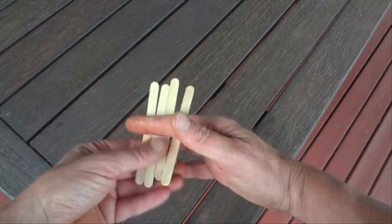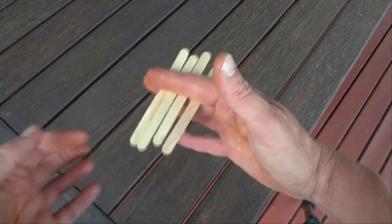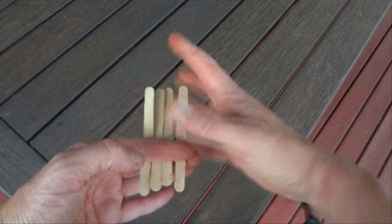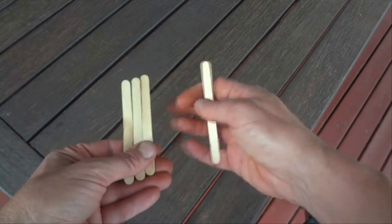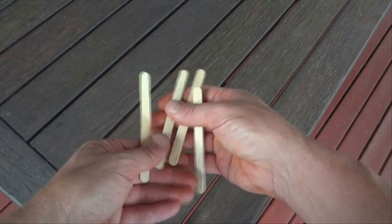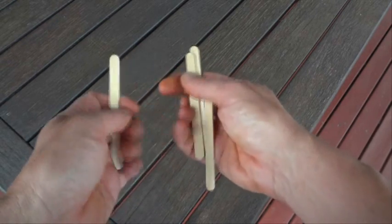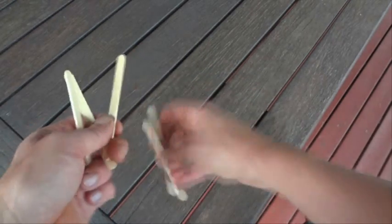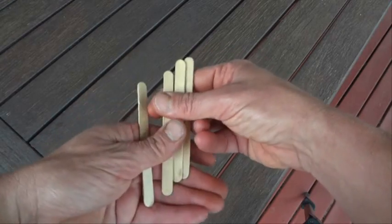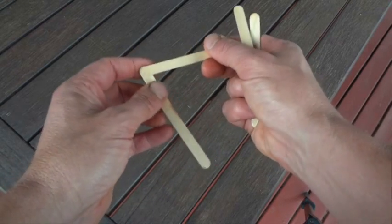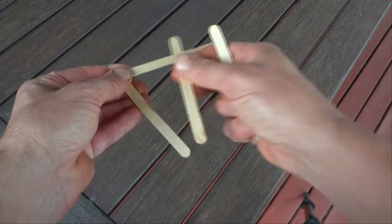Hi there, I'm going to show you how to make one of those ice block stick boomerangs. What you need is four of these sticks from your ice block or ice cream. You can buy them if you need to. Make sure you give them a good clean if they're ones that you've used.